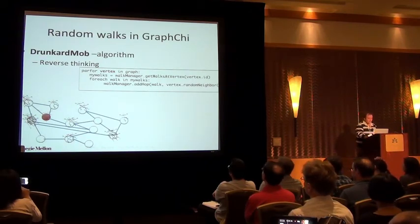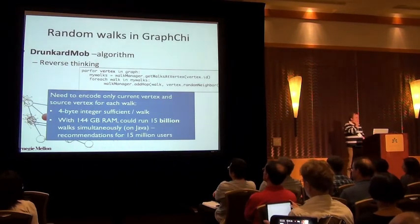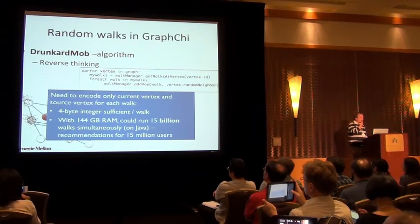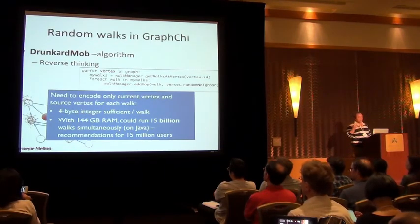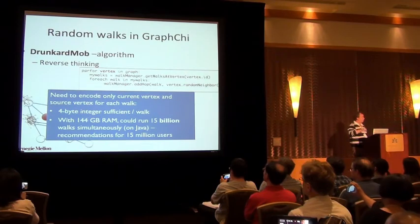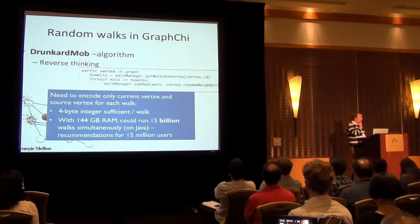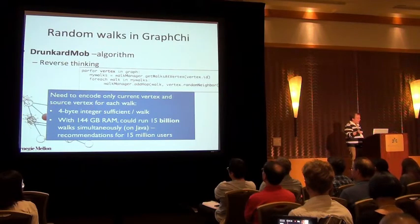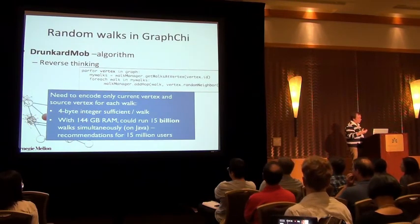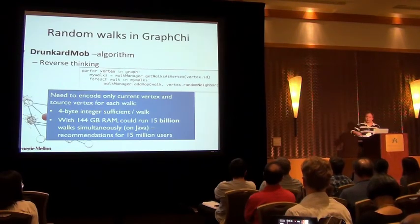Now, this is possible quite efficiently. I don't know if you can see the great animations. This is possible quite efficiently, because to encode the state of each walk, you just need four bytes to store what is the current location of the walk, and what was its source vertex. And this is also work I did at Twitter. So, with 144 gigabytes of RAM, I could run 15 billion random walks in parallel. This was on Java, so I think with C++ you could do way more. And with this, I could compute simple recommendations for 15 million users at a time. It took about one day to run this whole operation, but because you do it for 15 million users at a time, the throughput is actually pretty good.